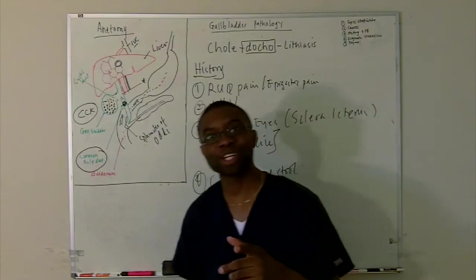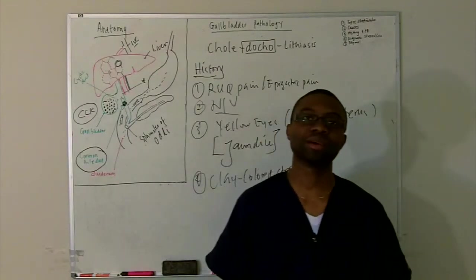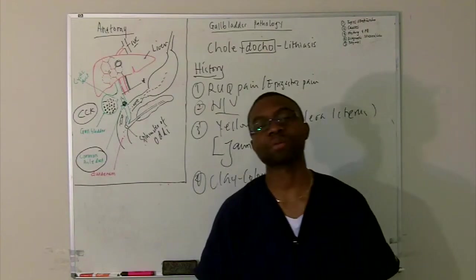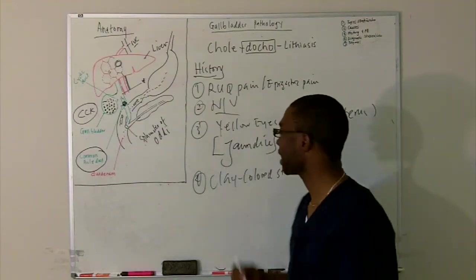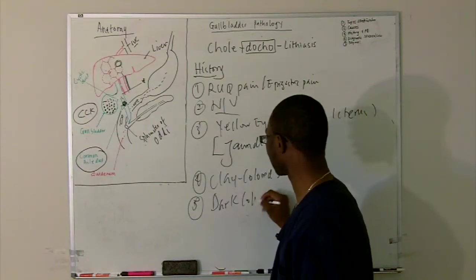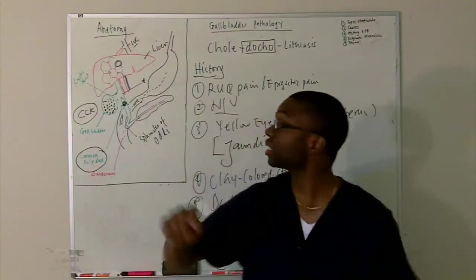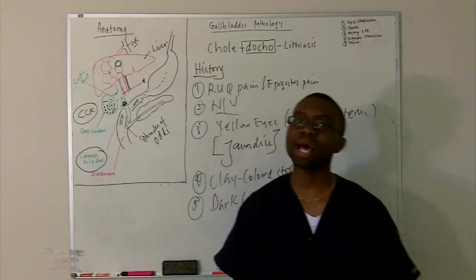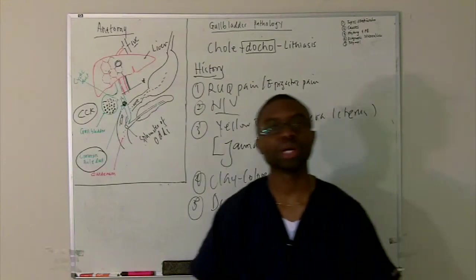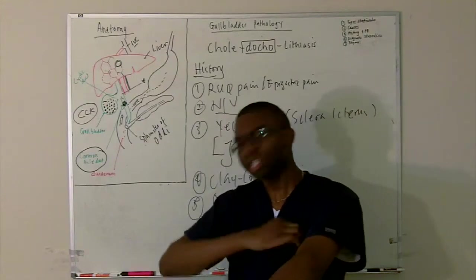But guess what's gonna happen? Since all this bilirubin is backing up, it's going to your bloodstream. Now, the blood's gotta go through the kidneys. When it gets into the kidneys, we got a problem. It's gonna spill out the bilirubin and now it's gonna give your urine dark colored urine. Isn't it funny? When you understand where things are going and how things are ending up, you realize it's not that hard.